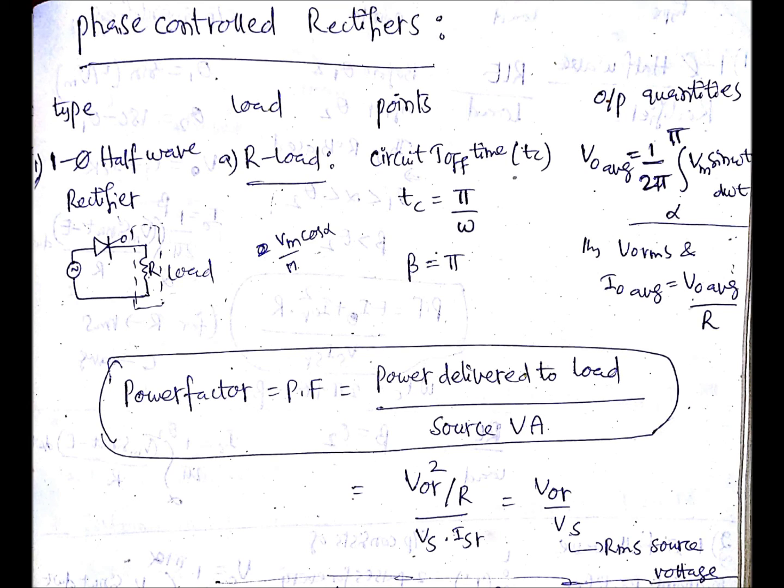The power delivered to load will be V0 RMS squared divided by R, and source VA is source voltage RMS times source current RMS. If you do simplification, you will get V0R by Vs, where V0R is output RMS voltage and Vs is source RMS voltage.